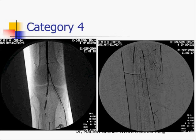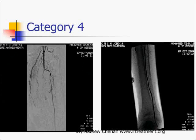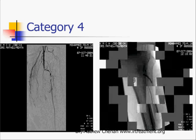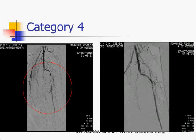Here is a patient with a category 4 lesion. You can see multiple stenoses in the popliteal artery with extensive disease of the tibial vessels, and this is the end result after angioplasty. You can see another category 4 lesion — single vessel run-off with extensive stenosis of the anterior tibial — and this is the balloon and the end result after angioplasty.